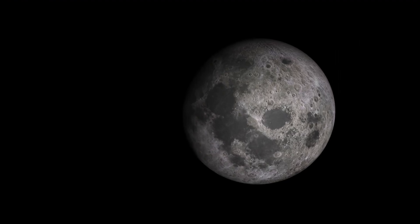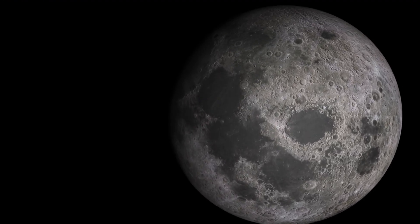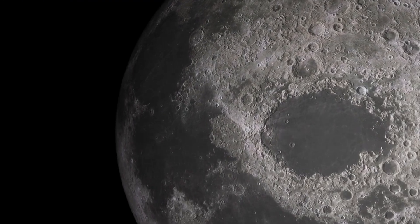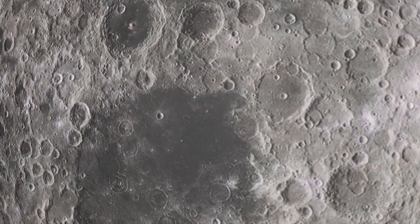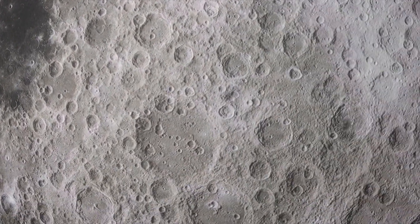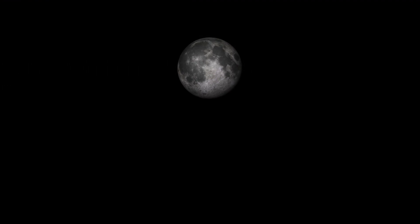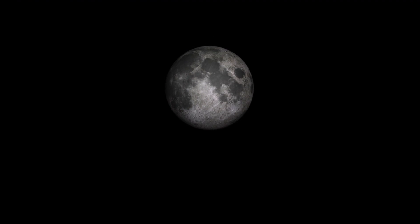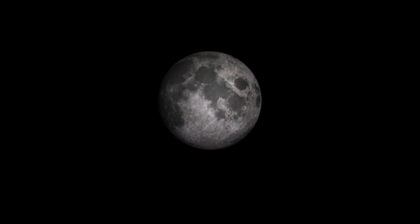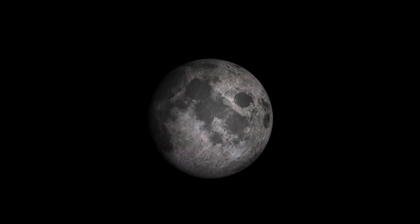Some scientists attribute these disparities to Earth's tidal forces, while others argue they stem from a catastrophic asteroid impact, with heat from the collision altering the moon's interior. One notable hypothesis comes from Matt Jones and his team at Brown University, who explored how an asteroid impact at the south pole Aitken Basin could have shaped the moon's evolution.